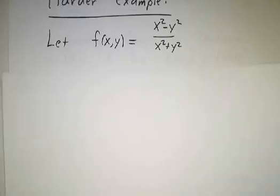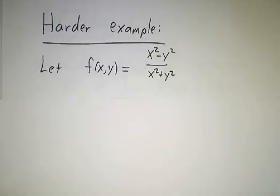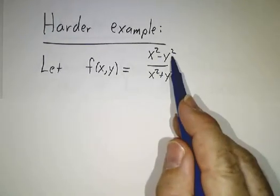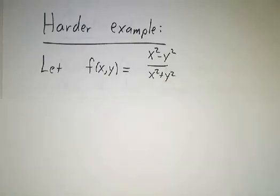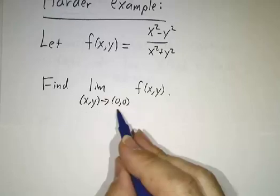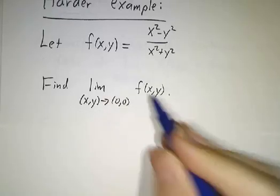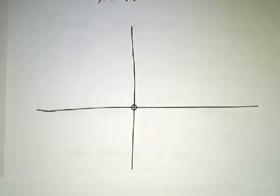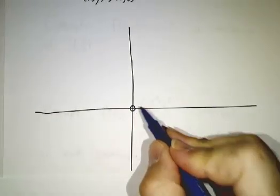But a harder example would be this function. Let's consider the function f of x, y is x squared minus y squared divided by x squared plus y squared. And we want to figure out the limit as x, y approaches 0, 0 of this function. 0, 0 is not in the domain because you'd be dividing by 0.